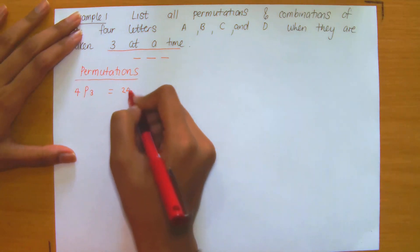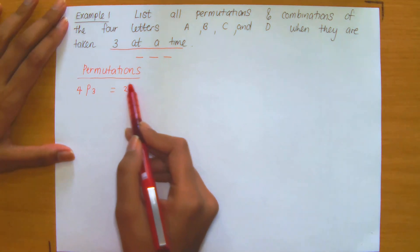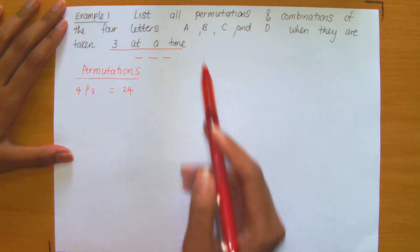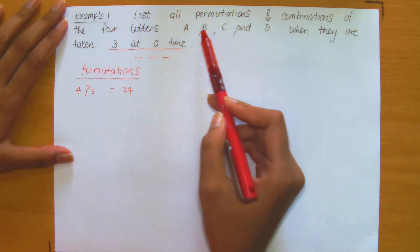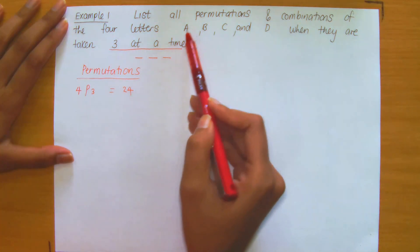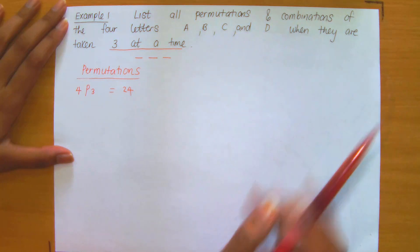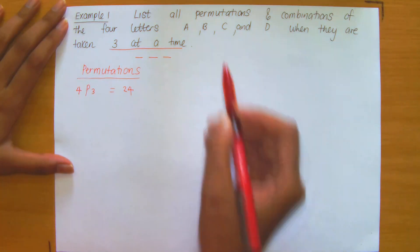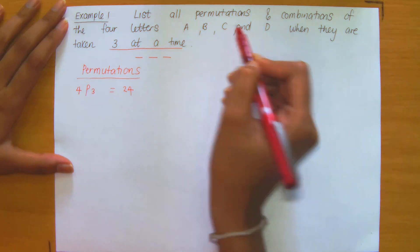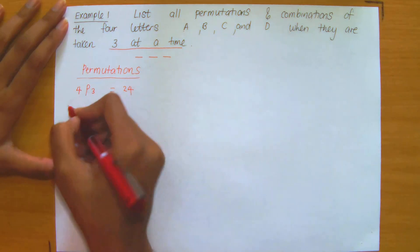So the answer is 24, meaning we are going to have 24 different three-letter arrangements of the letters A, B, C, and D. Since we're working with three at a time, let me first work with A, B, and C, leaving out D.